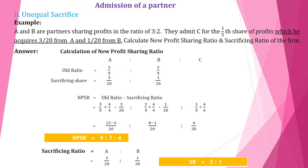For A: 3/5 − 3/20 = 12/20 − 3/20 = 9/20. For B: 2/5 − 1/20 = 8/20 − 1/20 = 7/20. For C it is 4/20. So the new profit sharing ratio is 9:7:4. For the sacrificing ratio, since the sacrificing shares are directly given, we write A's as 3/20 and B's as 1/20, giving a sacrificing ratio of 3:1.